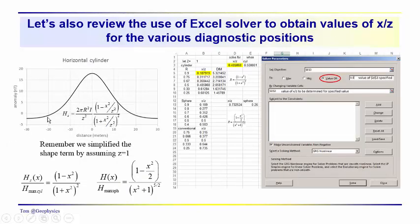I did want to just come back and mention the Excel solver approach for determining these diagnostic positions. We had in the case of the horizontal cylinder this expression in order to calculate diagnostic positions. We're asking at what value of x, or x over z, does the anomaly fall to 1 half of its maximum value, or 1 third, or whatever.